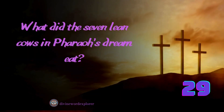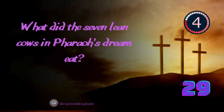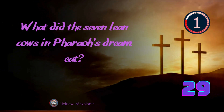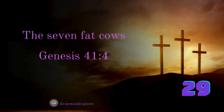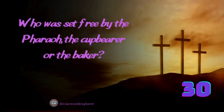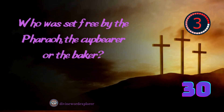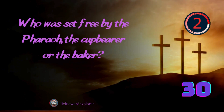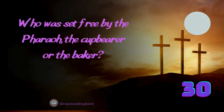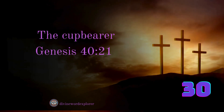What did the seven lean cows in Pharaoh's dream eat? Answer: The seven fat cows. Who was set free by the Pharaoh, the cupbearer or the baker? Answer: The cupbearer.